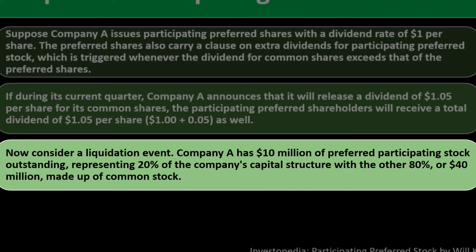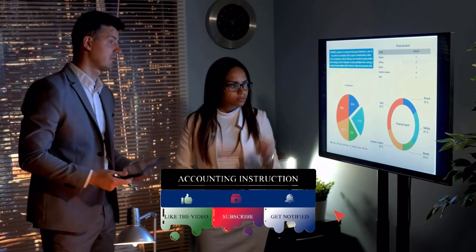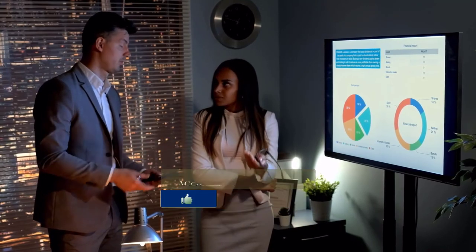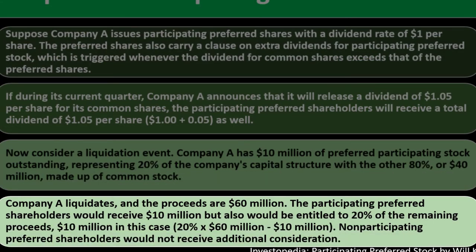Now consider a liquidation event. Company A has $10 million of participating preferred stock outstanding, representing 20% of the company's capital structure, with the other 80% — or $40 million — made up of common stock. Assets minus liabilities equals equity, which represents the net value of the company broken out between shareholders in the form of common and preferred stock, with an 80/20 split. Company A liquidates and the proceeds are $60 million. The participating preferred shareholder would receive $10 million but would also be entitled to 20% of the remaining proceeds — 20% of ($60 million minus $10 million), which is $10 million more. Non-participating preferred shareholders would not receive that additional consideration.